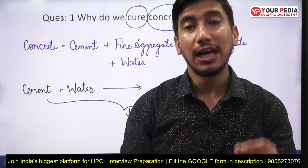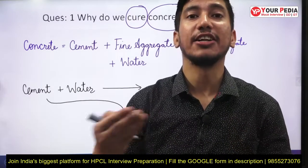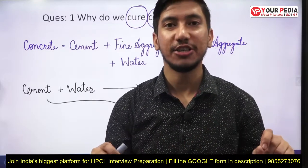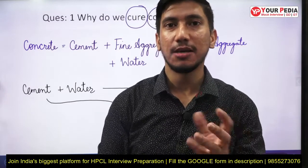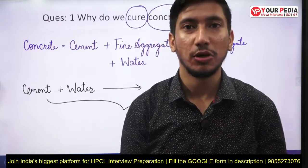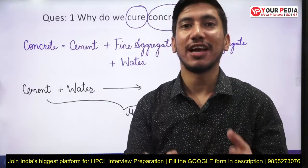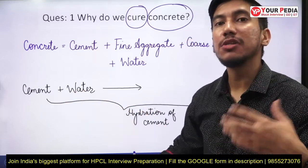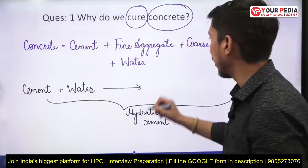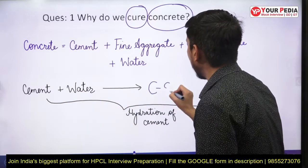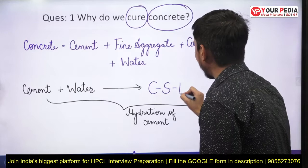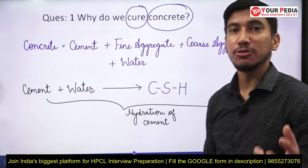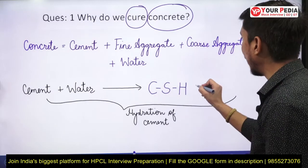The answer lies in the hydration of cement. When cement grains come in contact with water, a chemical reaction kicks in. Cement reacts with water to form certain compounds — it forms a compound called CSH gel, which is hydrated calcium silicate.